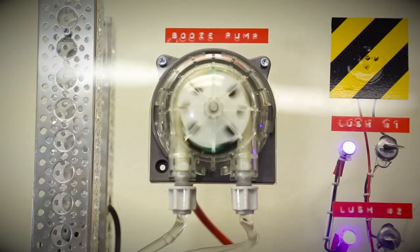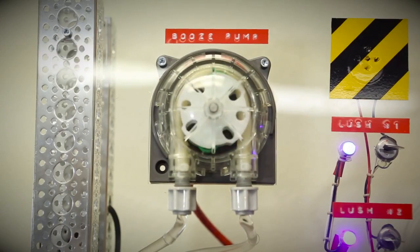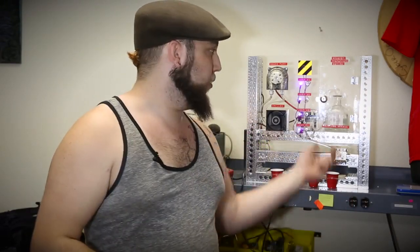There's actually a rubber tube inside the pump that's being rolled so that it pushes a set volume of fluid through at a time. So you can time the number of revolutions on the pump and actually accurately dispense a certain volume of your beverage.